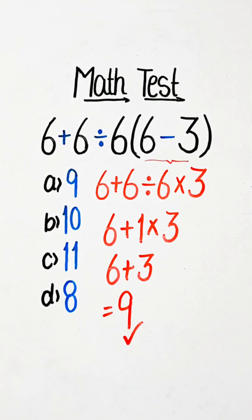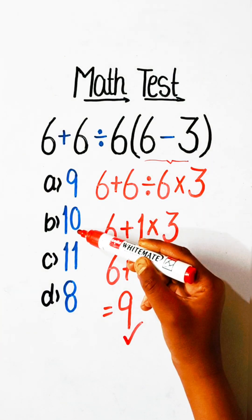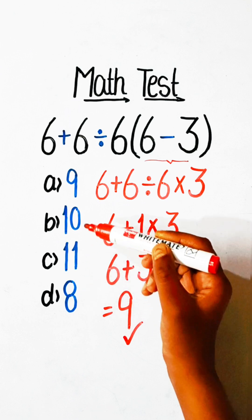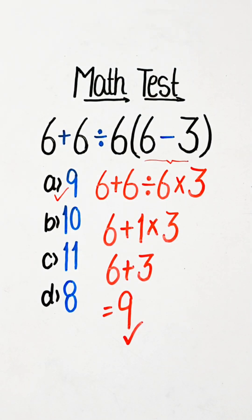So 9 will be our correct answer. Here in options, option A is 9, 10, 11, and 8. So option A, 9 will be the correct one.